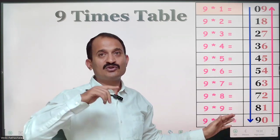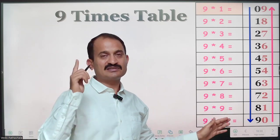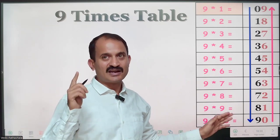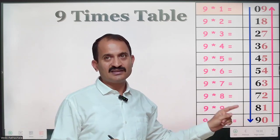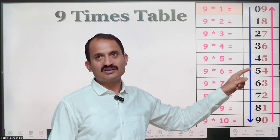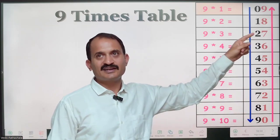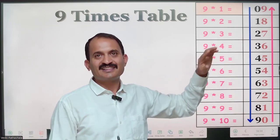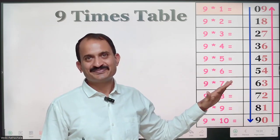For the units place, you can just reverse this. Start from the bottom and start writing 0, 1, 2, 3, 4, 5, 6, 7, 8, 9. That's it. This is the table of 9.